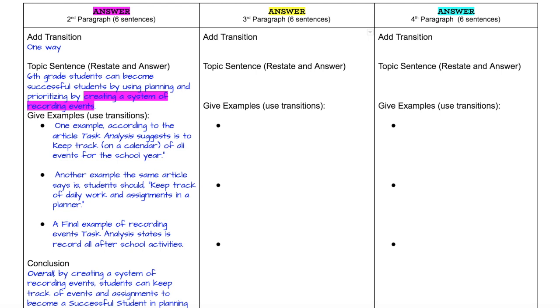Then finally, I need to add my conclusion. My conclusion is really explaining why I incorporated the evidence that I incorporated. So I use that transition word again, saying overall, by creating a system of recording events, students can keep track of events and assignments to become a successful student in planning and prioritizing. So I'm really explaining how that evidence ties back to my topic sentence and showing my readers how it all goes together.